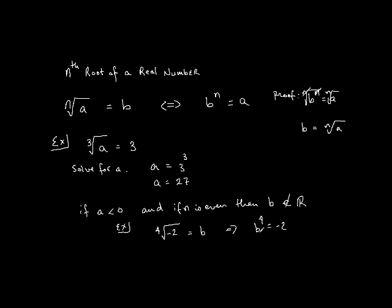Now, it's impossible to multiply b with itself an even number of times and get a negative answer. Because let's say,